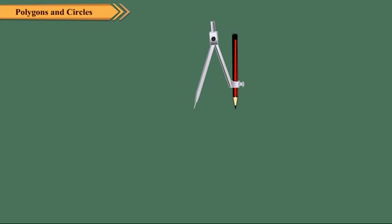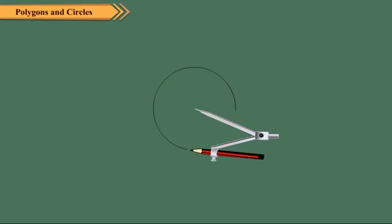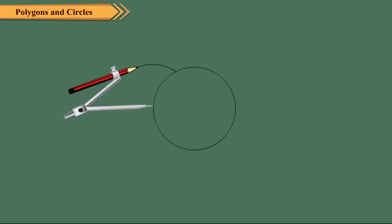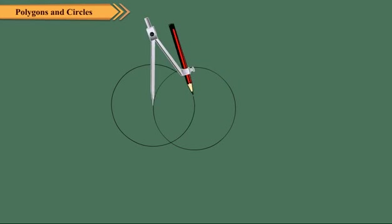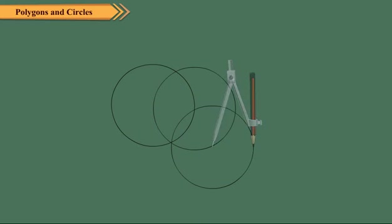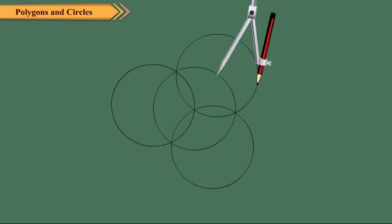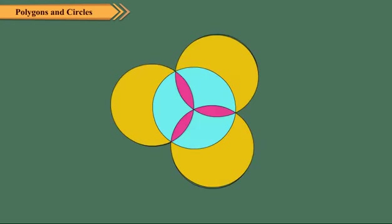We can use the compass to make beautiful designs by drawing circles. Draw a circle of any convenient radius. Without disturbing its opening, put its metal tip on the circumference of the circle and draw another circle. Put the metal tip of the compass at one of the crossing points of the circle and draw another circle. Repeat the above steps till you get a design as shown here. Now, colour the design to make it beautiful.